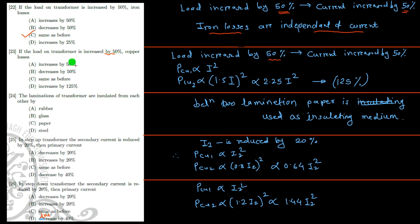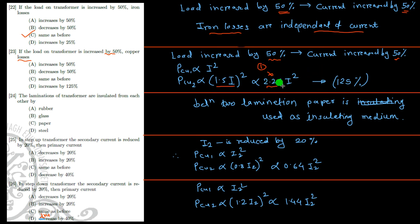Next: the load current is increased by 50%, what happens to the copper loss? If the original current is I, copper loss is proportional to I². Increasing the load by 50% means the new current is 1.5I, so new copper loss is (1.5)² = 2.25 times the original. Originally it was 1, now it is 2.25, so copper losses are increased by 125%. The correct option is: increased by 125%.